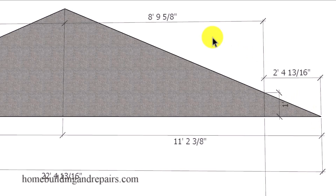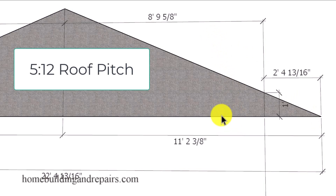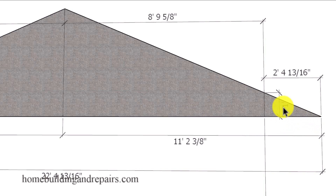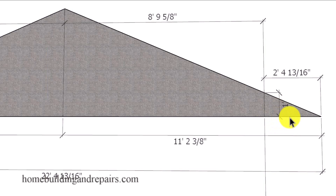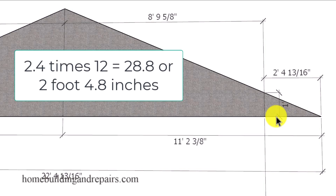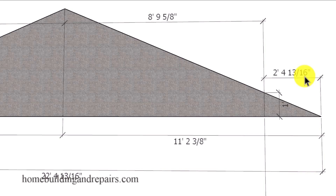The roof pitch we're dealing with here is a 5 and 12, meaning for every 12 inches in horizontal length we go up 5 inches. To find this length here, we simply divide 5 into 12 to come up with 2.4 — representing 2.4 segments to provide us with the length. We then multiply 2.4 times 12 to arrive at 28.8 inches, or 2 foot 4.8 inches — basically 2 foot 4 and 13/16 inches, just a little bit over 2 and 3/4 inches.